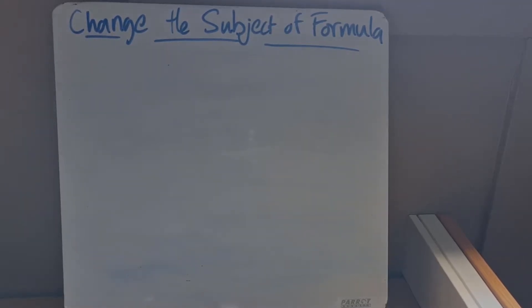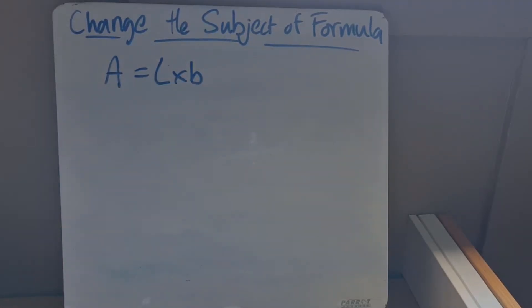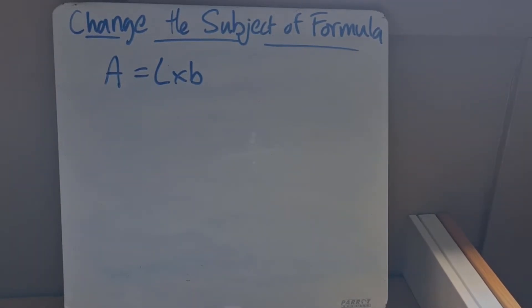Welcome to today's video in which we are going to be looking at changing the subject of the formula. It often happens that the variable we are looking for is not the subject of the equation or formula. For example, with area equals length multiplied by breadth, if we know the area and length we can still use the same formula to calculate the breadth. There are two possible methods to do this, so let's look at both with a typical example.